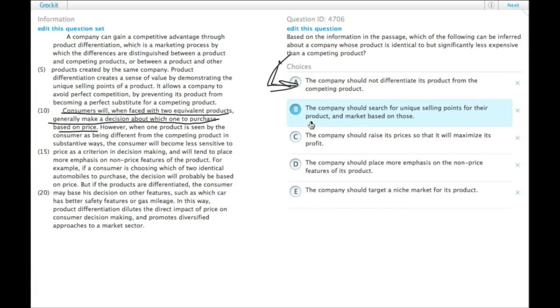The company should search for unique selling points for their product and market based on those. That is the definition of product differentiation, and you don't need to do it if yours is already the cheaper one and you're identical.